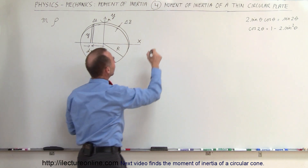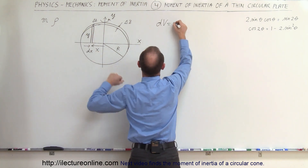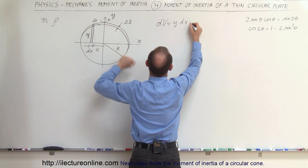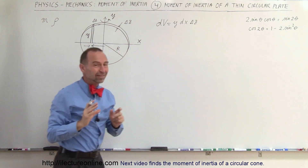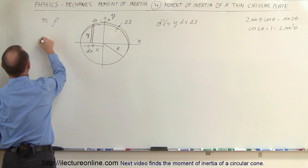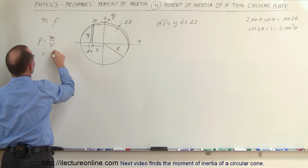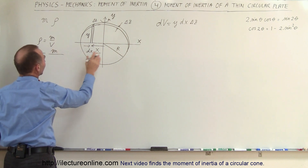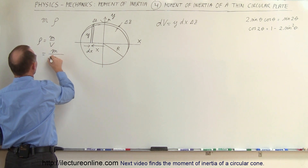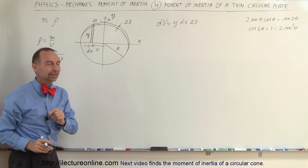The volume of that small segment, let's call it dV, is equal to the height y times the width dx times the thickness delta z. The density rho equals the mass divided by the volume, which for the disc is the mass divided by the area times the thickness — that is, m divided by pi r squared times delta z. We'll plug that in to the equation later.